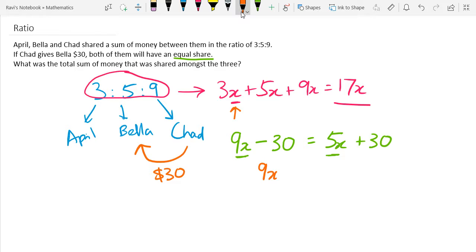So the next step is to solve the equation. So 9x, 5x, you bring over, you become minus 5x. Then this 30, and this 30 you bring over, you get plus 30. So you have total of 4x equals to 60. And that gives us x equals to 15.